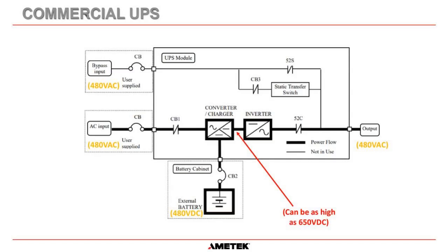The DC bus inside a commercial UPS can be as high as 650 volts DC, because there is just a bridge rectifier on the input that converts 480 volts AC into DC. Once again, this saves on cable sizing and IGBT sizes.